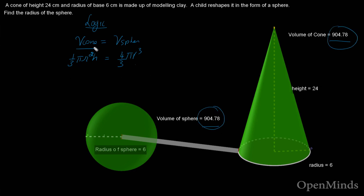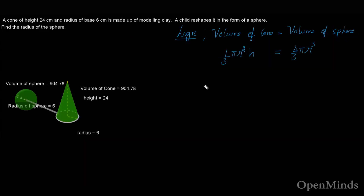So if we equate the two volumes — volume of cone equals volume of sphere — solving this gives us the answer. On the left-hand side is the cone formula, and on the right-hand side I'm looking for the radius of the sphere. The radius and height of the cone are given: radius is 6 and height is 24.